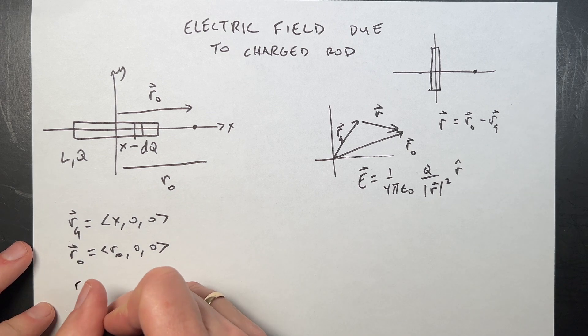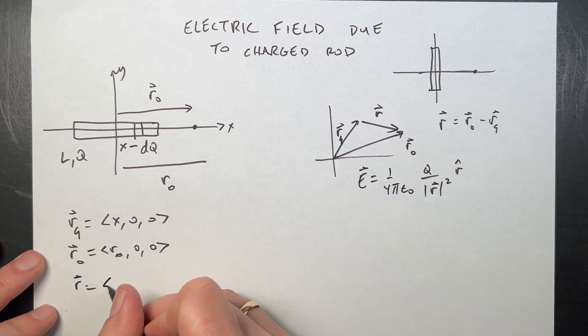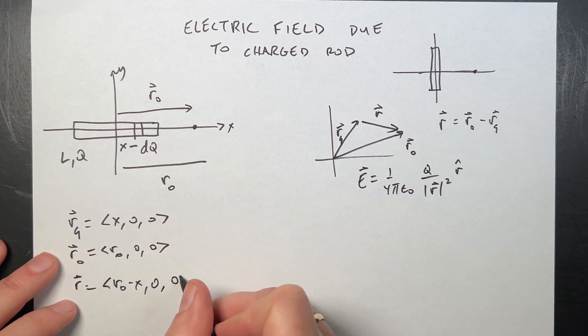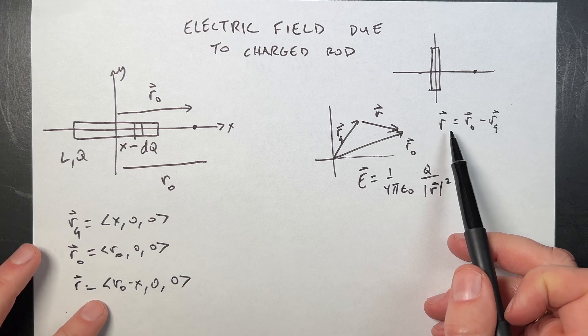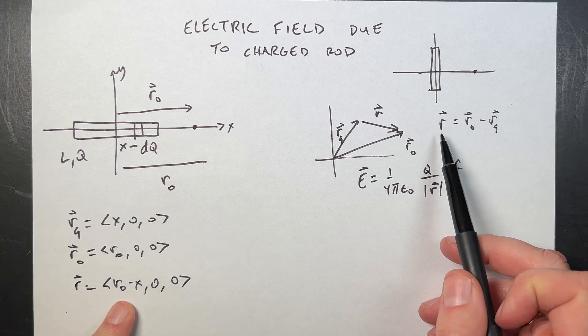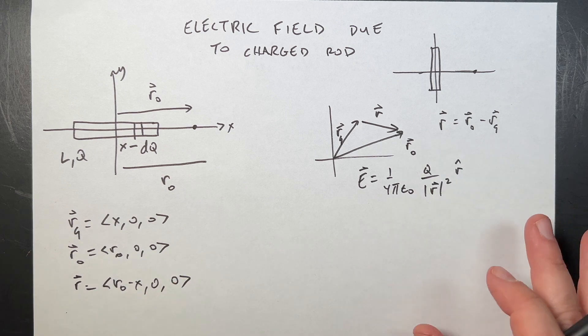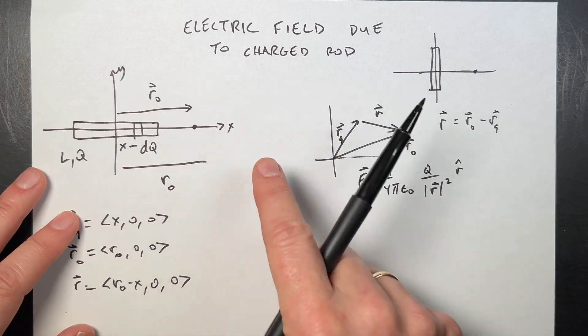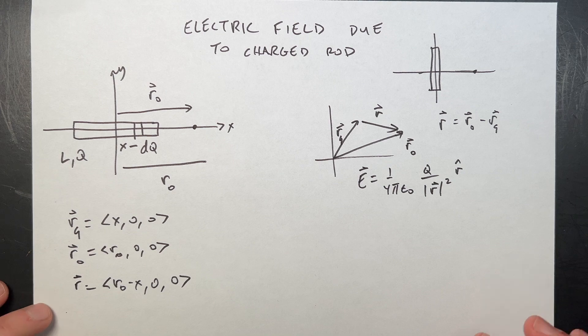But anyway, now I have those two. I can find R. The vector R is this minus that. So it's r0 minus x, 0 minus 0, 0 minus 0. And you see that the only value of R is only going to be in the x direction. So this makes the problem easy. We don't have to worry about the y or the z direction, which we knew anyway, because if all the charge is in the x direction, they're all going to add up electric fields that way.